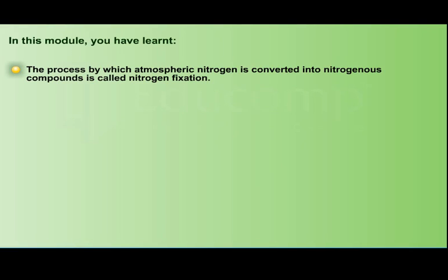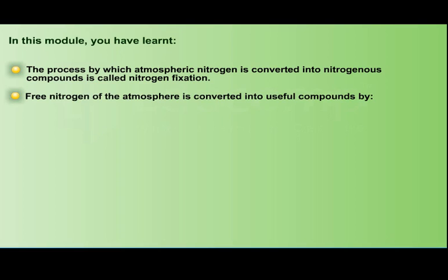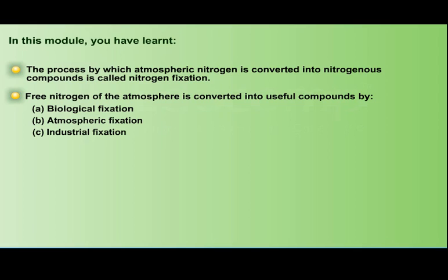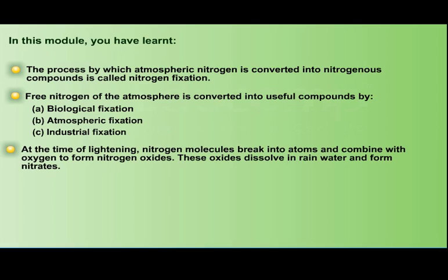In this module you have learned: the process by which atmospheric nitrogen is converted into nitrogenous compounds is called nitrogen fixation. Free nitrogen of the atmosphere is converted into useful compounds by biological fixation, atmospheric fixation, and industrial fixation. At the time of lightning, nitrogen molecules break into atoms and combine with oxygen to form nitrogen oxides. These oxides dissolve in rainwater and form nitrates.